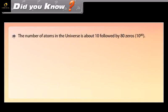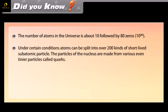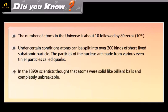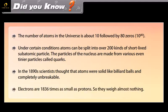Did you know? The number of atoms in the universe is about 10 followed by 80 zeros. Under certain conditions, atoms can be split into over 200 kinds of short-lived subatomic particles. The particles of the nucleus are made from even tinier particles called quarks. In the 1890s, scientists thought that atoms were solid like billiard balls and completely unbreakable. Electrons are 1836 times as small as protons, so they weigh almost nothing.